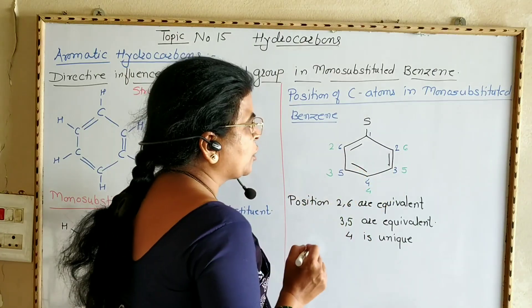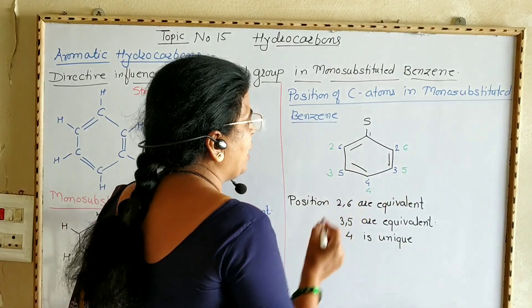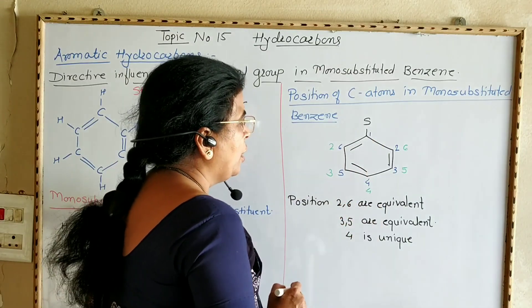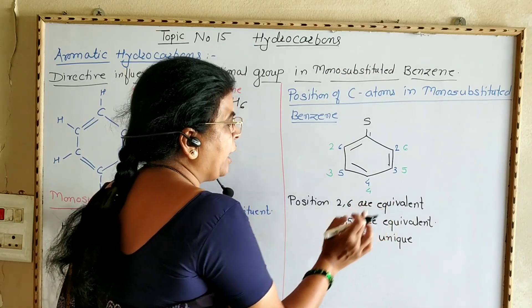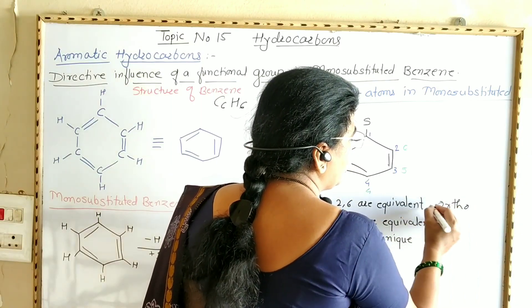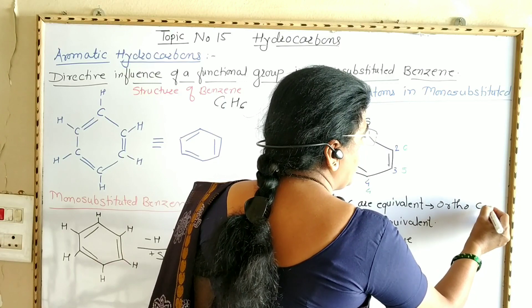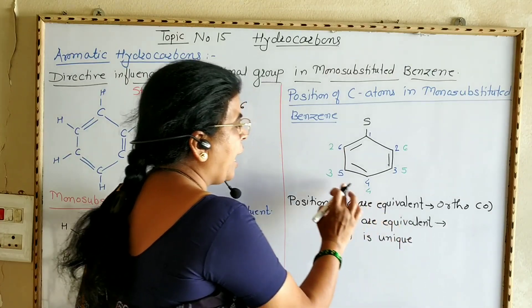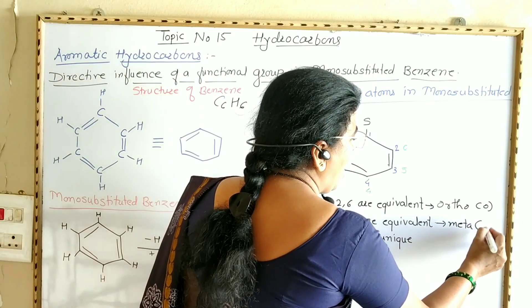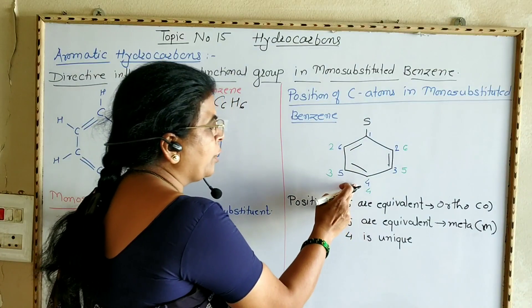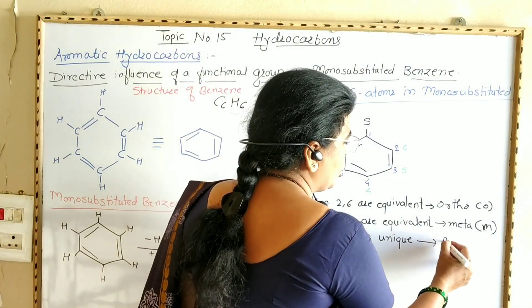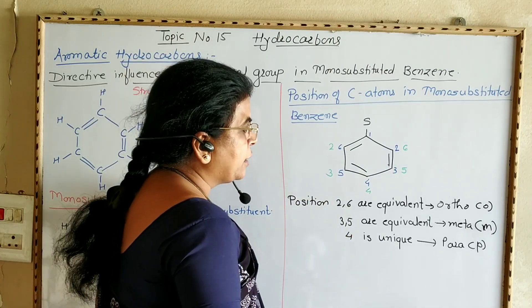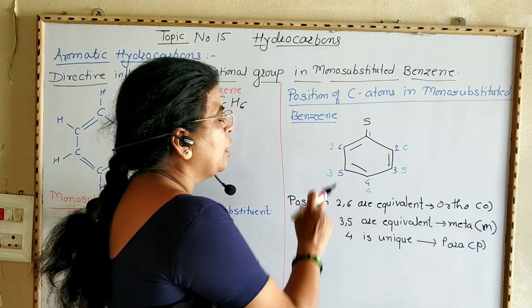Carbon numbers 2 and 6 are equivalent to each other, as are 3 and 5, while position 4 is a unique position. Positions 2 and 6 are called the ortho position, abbreviated as 'o'. Positions 3 and 5 are equivalent and called the meta position, abbreviated as 'm'. Position 4 is the unique para position, abbreviated as 'p'.